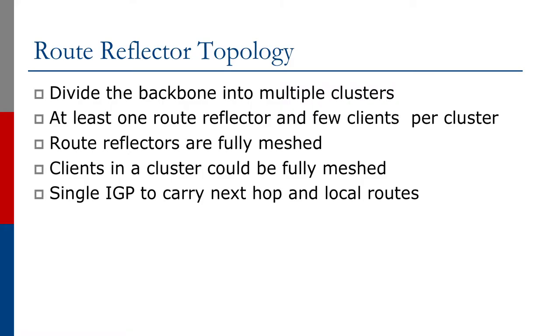To set up a backbone using route reflectors, the best approach is to divide the backbone into multiple clusters, with at least one route reflector and a few clients per cluster. The standard point-of-presence design seen in many service provider backbones maps very nicely onto this setup. Core routers in a POP serve as route reflectors, and the other routers in the POP are their clients.